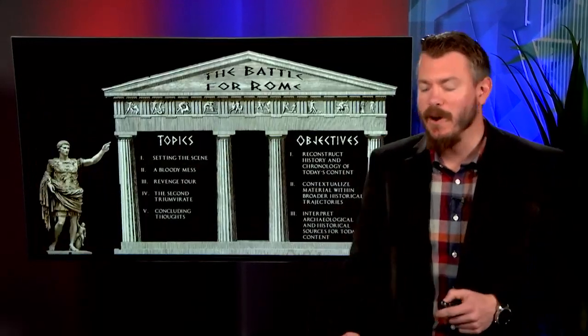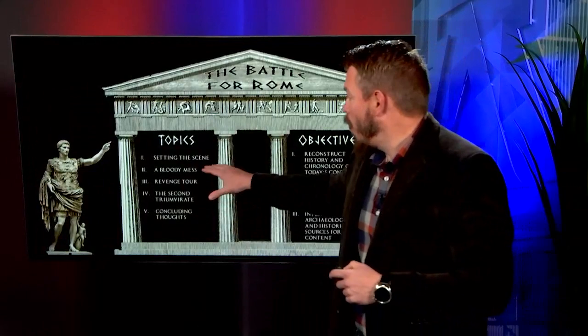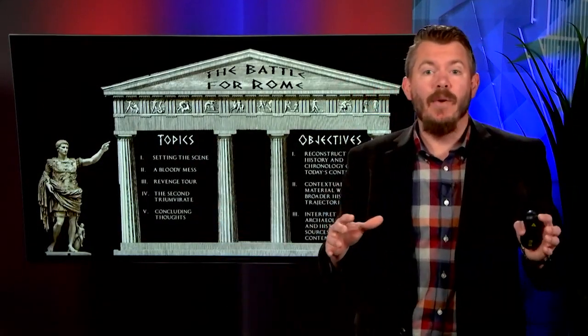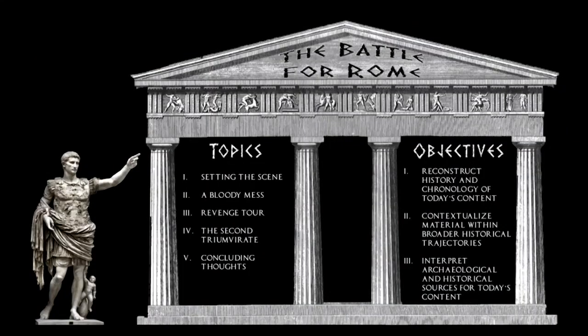So let's take a look at what we're going to do. We'll start by setting the scene, figuring out how we got to this point in time, and then we're going to take a look at the bloody mess that's erupted after the assassination of Caesar. From there, we're going to look at the revenge tour of the Second Triumvirate. And finally, we'll wrap up with a few concluding thoughts.